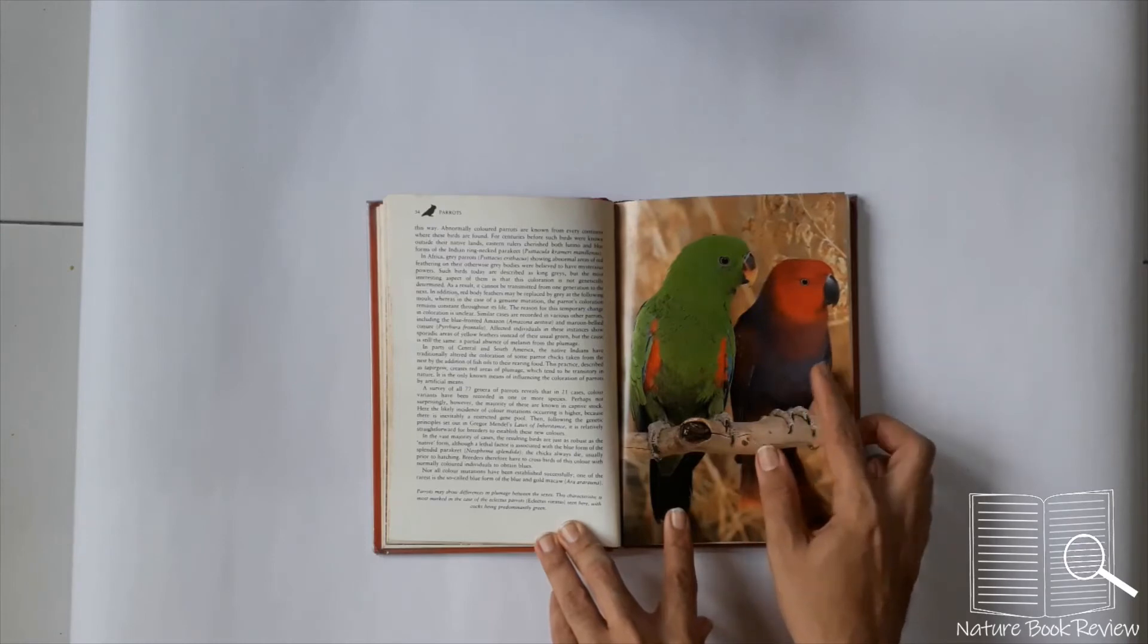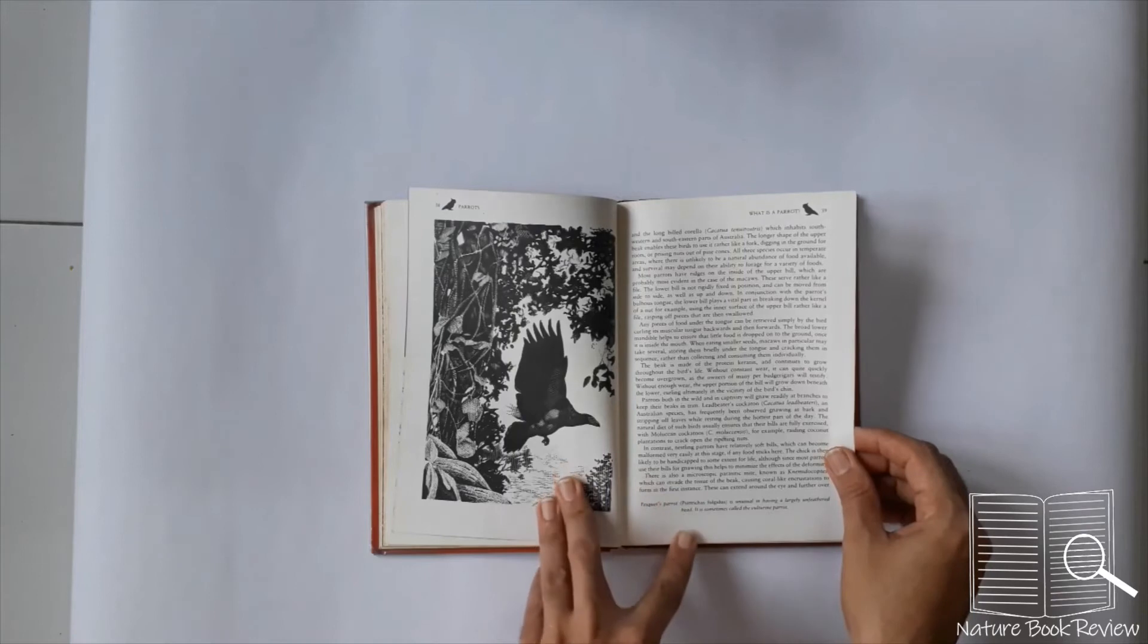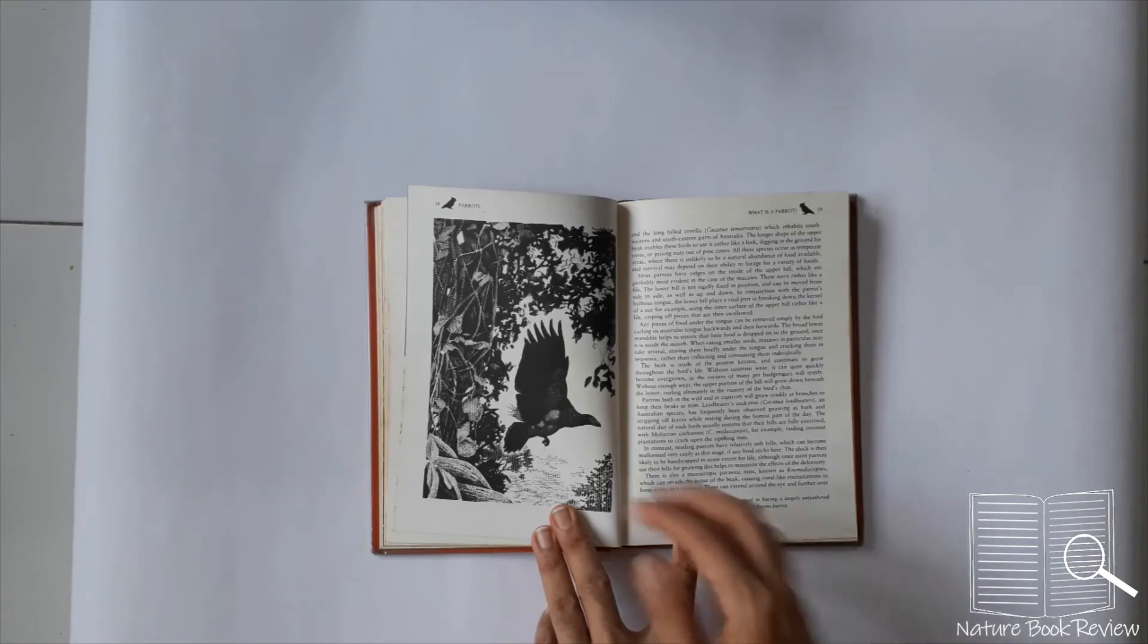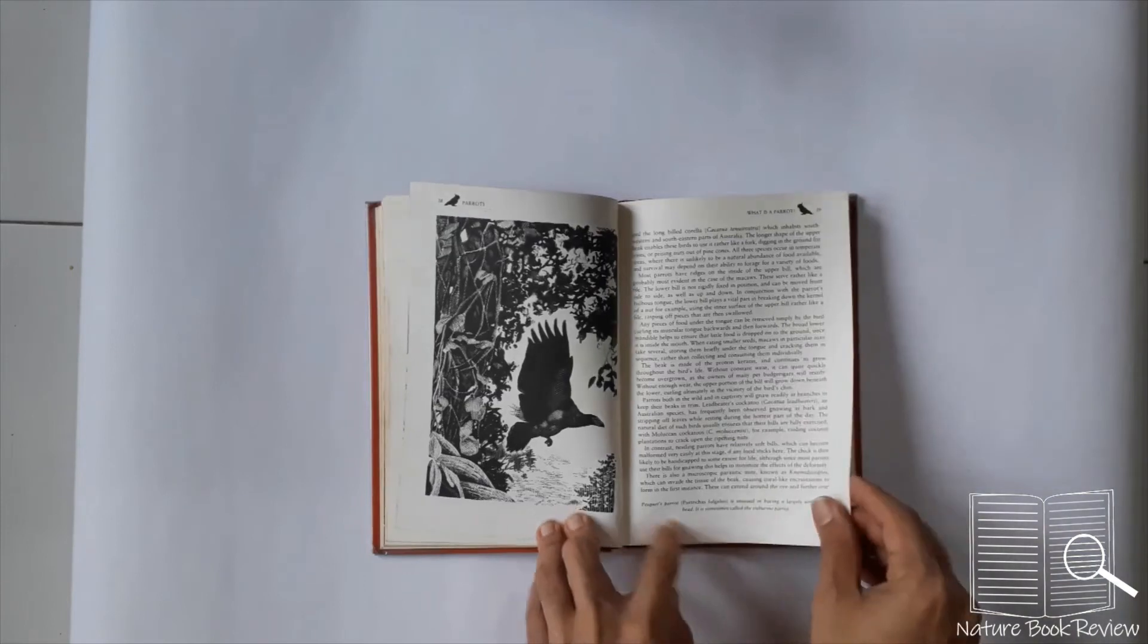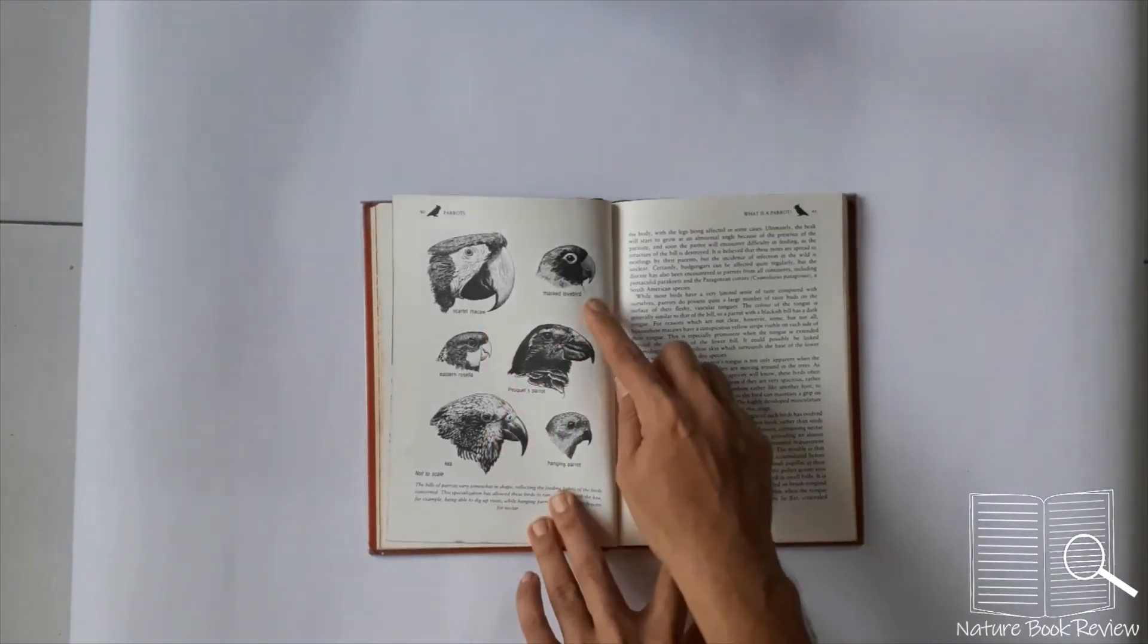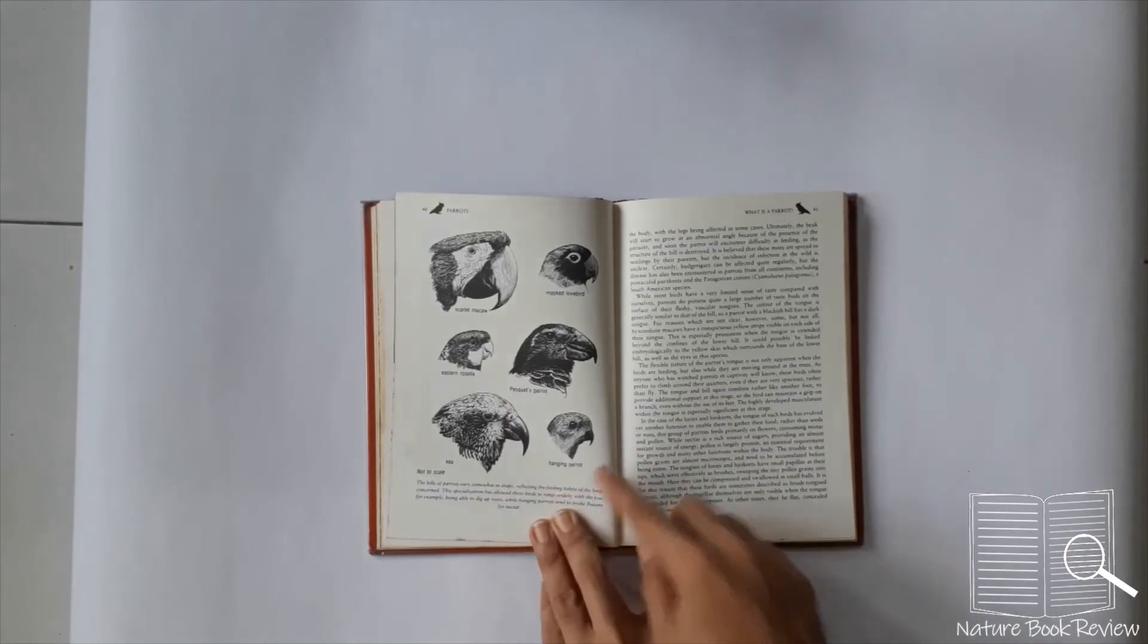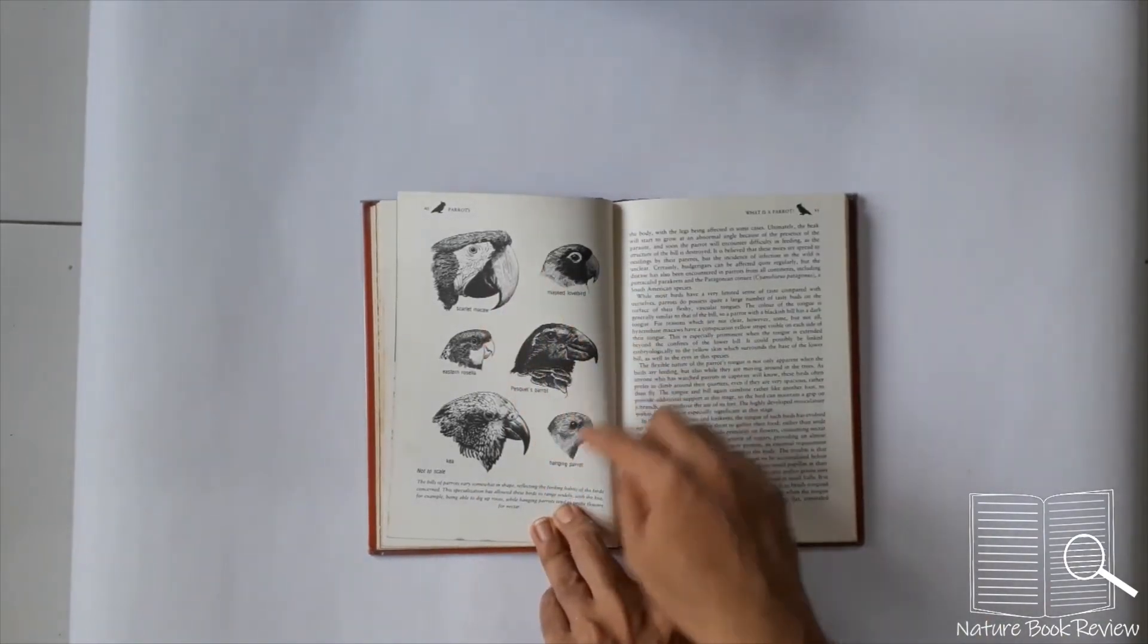Eclectus parrots. Now this is called the pesquet parrot. It is unusual in having largely unfeathered head, like a vulture. It is sometimes called the vulturine parrot. These are the head profiles of different species - scarlet macaw, masked lovebird, pesquet parrot, eastern rosella, kea, and hanging parrot.